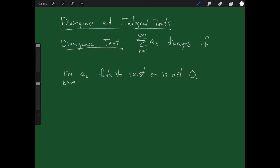If we want to figure out whether some infinite series converges or diverges, the first question we ask is: what about the sequence that makes up this series? We look at the a sub k's. What if we take the limit of the a sub k's? Two things could happen: either it's zero, or it's not zero.